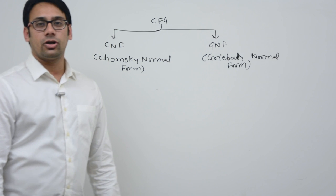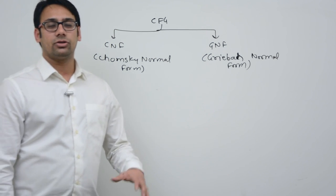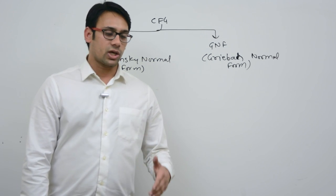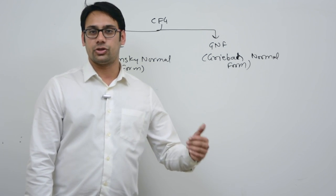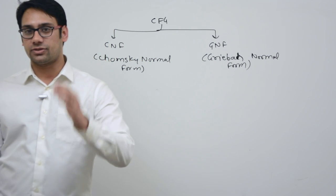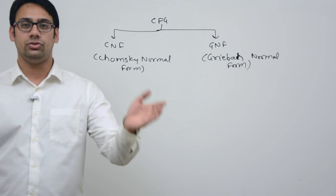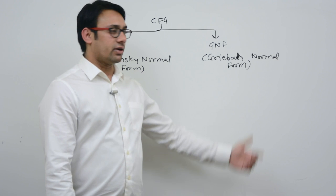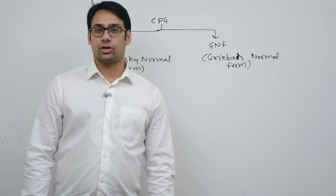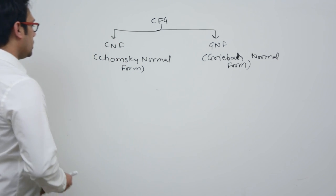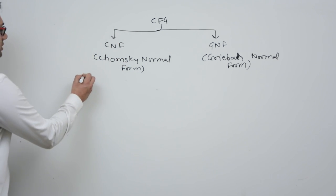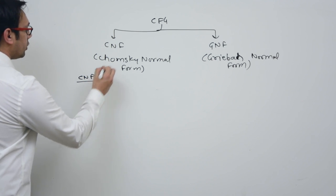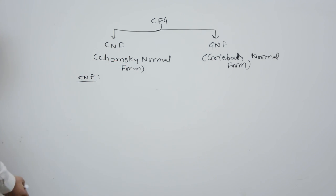When we say Greibach normal form, it is actually used to convert a pushdown automata to a context-free grammar, or a context-free grammar to a pushdown automata. That is the main advantage of Greibach normal form. So first of all, we are going to do CNF, which is the Chomsky normal form, and both of them are called normal forms.